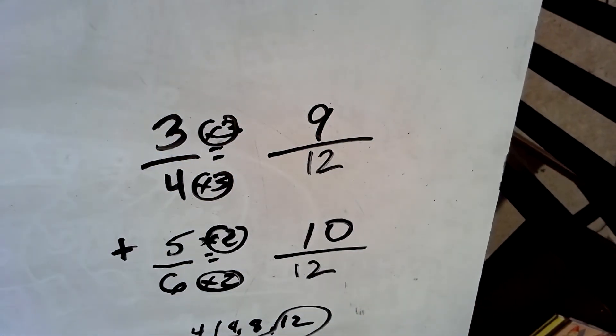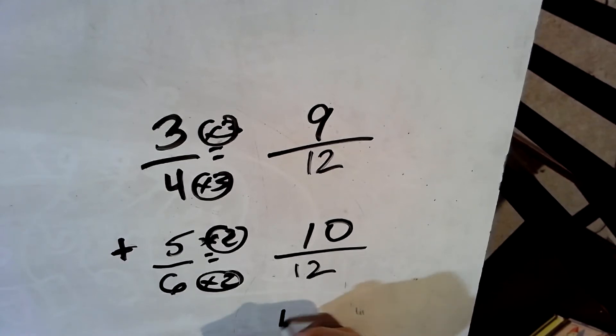Now I've got 9 twelfths plus 10 twelfths. And now it's easy to add them. I've got 19 twelfths.